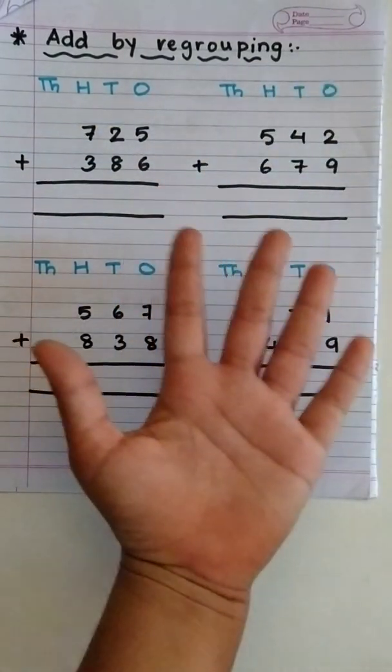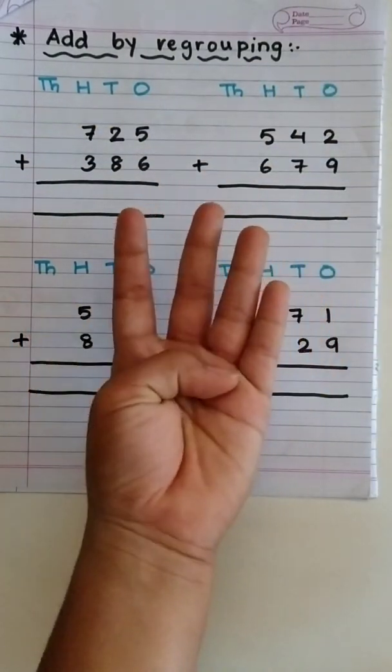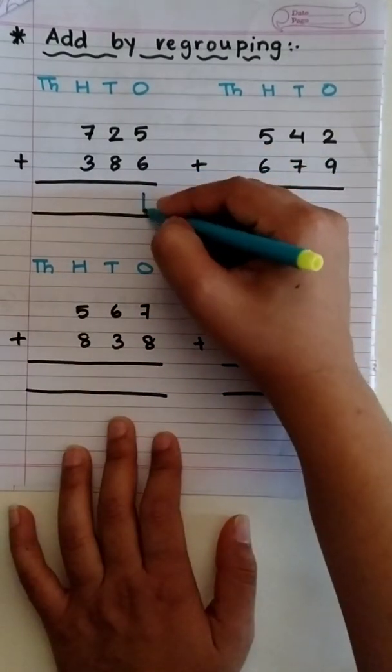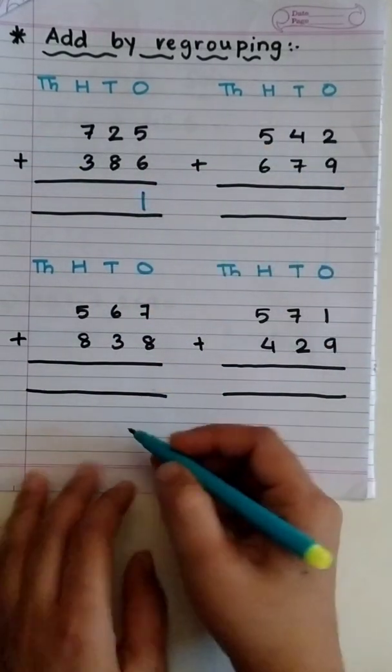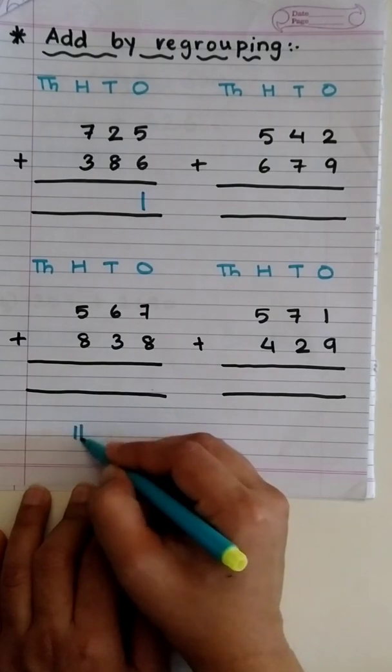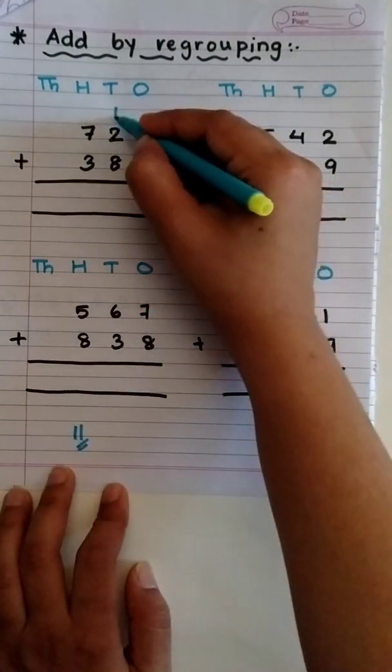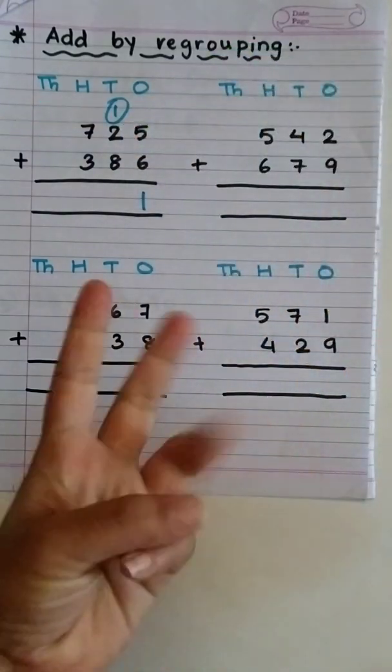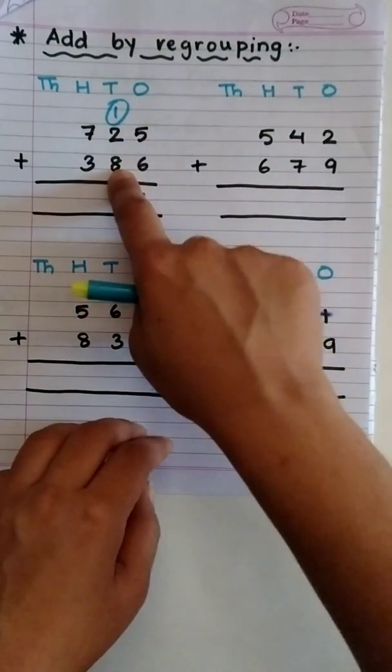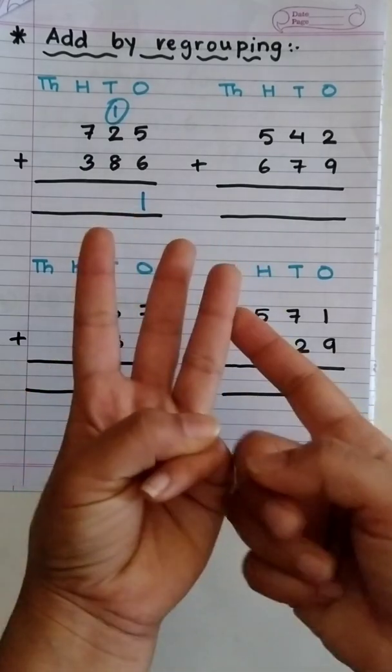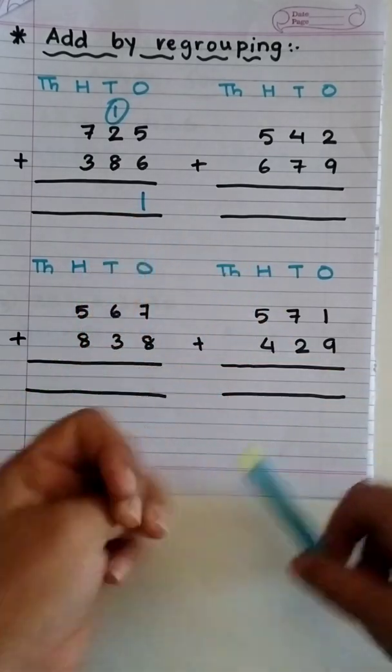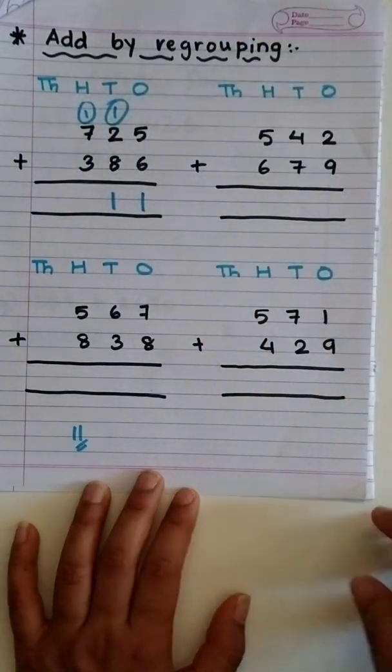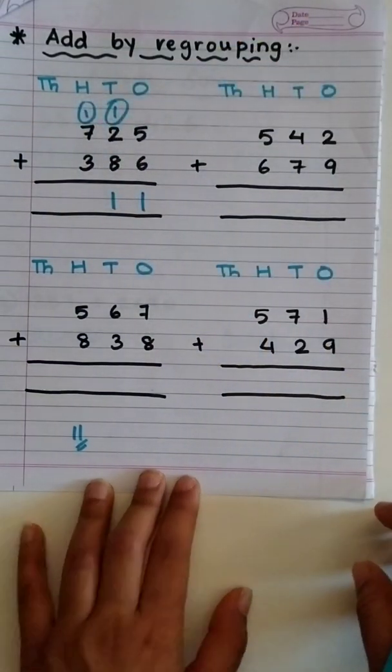6 in mind, 5 on finger. After 6, 7, 8, 9, 10, 11. So, 1 goes down as the answer is 11. So, 1 goes down and 1 goes up. Now, 2 plus 1 is 3. And, 8 plus 3. So, after 8, 9, 10, 11. Again, 1 goes down and 1 up. Easy? Good.